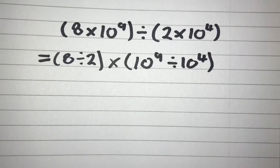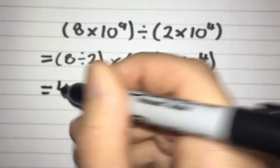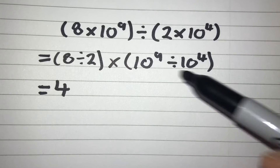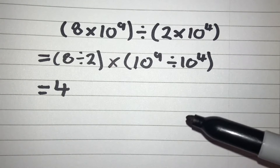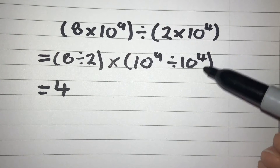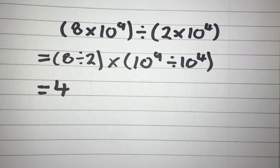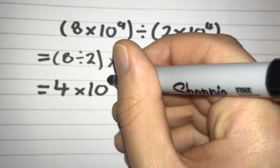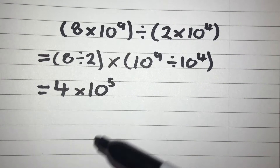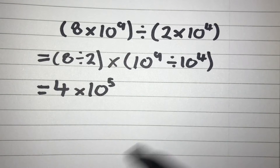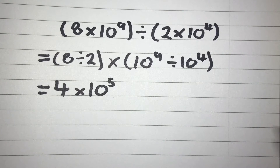Well, 8 divided by 2 we can do very easily — that's just going to give us 4. Then 10 to the power of 9 divided by 10 to the power of 4 — this is where we've got to think about our index laws. When we're dividing powers with the same base number, all we need to do is subtract the second power from the first power. So in this case we do 9 take away 4, that gives us 5, so we're going to have 4 times 10 to the power of 5. Checking it's in standard form: we've got a number between 1 and 10, and we're multiplying by a power of 10, so our answer is 4 times 10 to the power of 5.